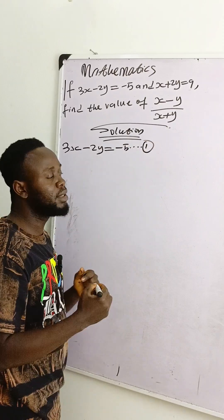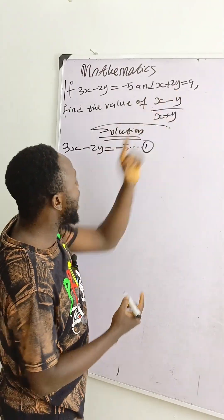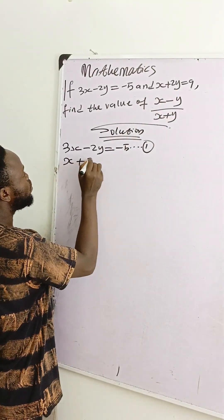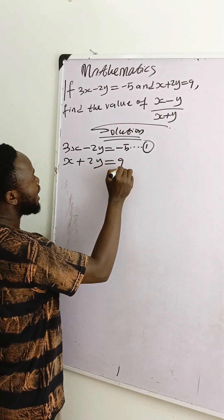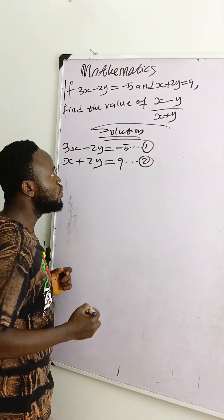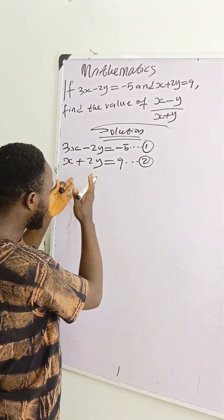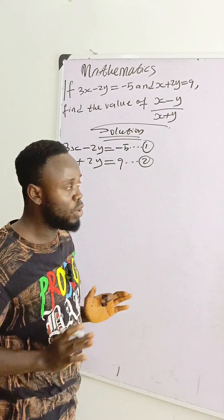Let's call this equation 1. And x plus 2y is equal to 9. Let's call this equation 2. You can see already that we are working with simultaneous equation.